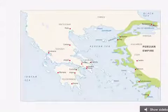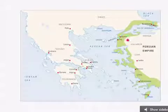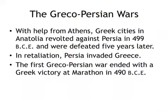These Ionian Greeks say they want their freedom and revolt against the Persian Empire. The mainland Greeks help them in their revolt, but the revolt fails. Persia is furious that these pipsqueak Athenian city-states tried to mess with their empire, so they go ahead and invade Greece.